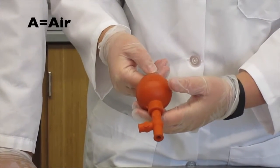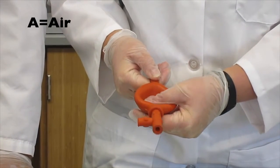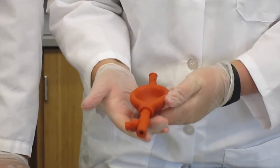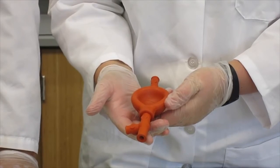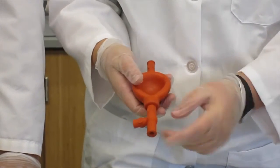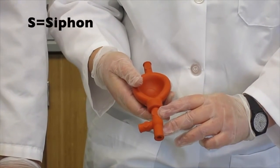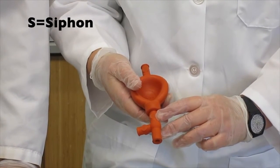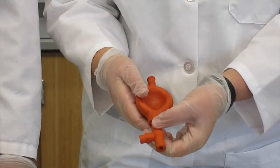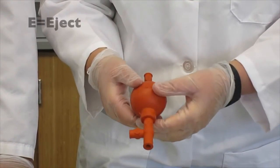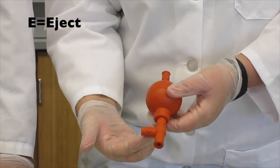The first valve to use is the A valve on the top. The A is for air because this valve allows air to release from the bulb to begin pipetting. Next, the S valve below the bulb is for siphon, which brings liquid into the pipette. The E valve on the side is for eject, releasing the liquid into a new container.